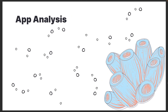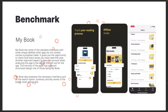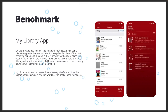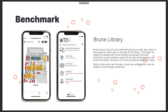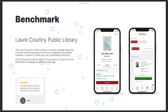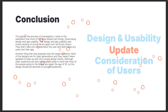I also did an app analysis. I analyzed certain apps to see how they were made and what they had. For example, here is one — MyBook. I searched specifically for applications that had books included in them. Another one was My Library app, Brune Library, Lower Country Public Library. My conclusion was that there weren't a lot of apps that had very good design — they were usable, however it wasn't ideal.